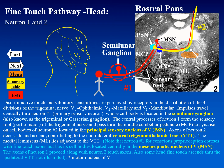Neuron one for proprioception from areas such as the muscles of mastication is a little different in that its cell body is in a separate nucleus — the mesencephalic nucleus of five in the rostral pons. This is a unipolar neuron serving as neuron one, and its axon runs with neuron two of the fine touch pathway.